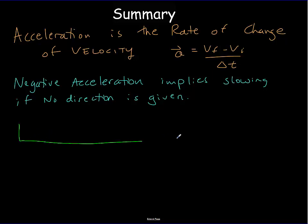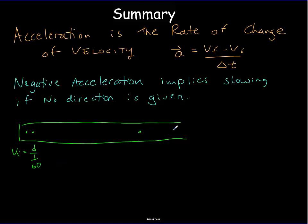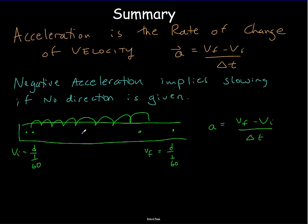We also looked at ticker tape timers, where the initial speed is the distance between dots divided by 1/60th of a second, and similarly for the final speed. We plug those into a = (v_f − v_i) / delta t, where delta t is the number of time intervals between the two sets of dots, multiplied by 1/60th of a second. That's all for today — thank you very much.